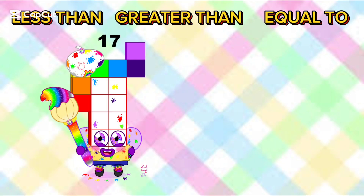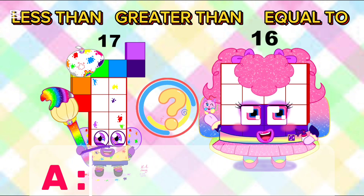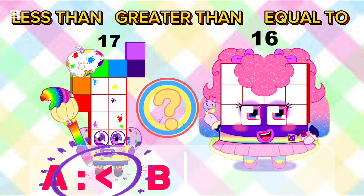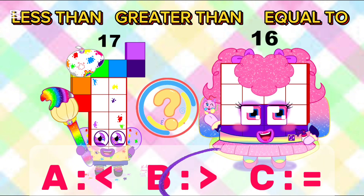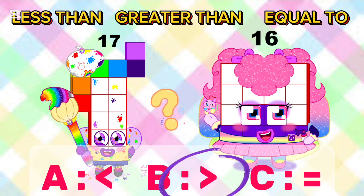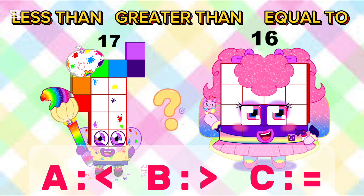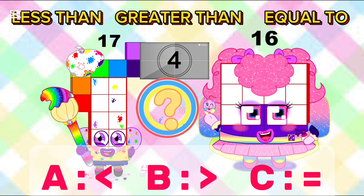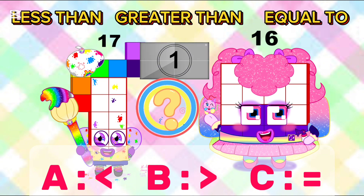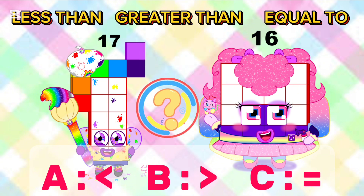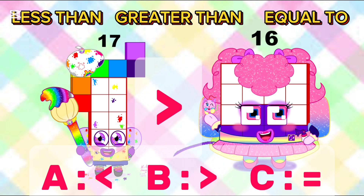17 and 16. What will come? A: less than, B: greater than, C: equal to. The answer is B, greater than. 17 is greater than 16.